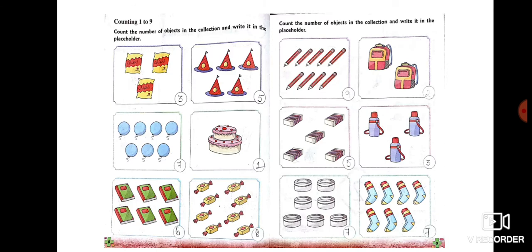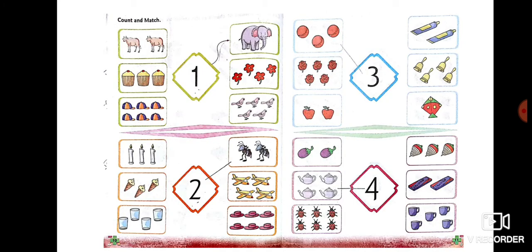Coming to the next page, here we have to count the objects in each box and write the number in the small circle at the right corner of each box. As you can see, the first box contains three packets of chips, so we have to write three in that small circle. Complete with eight and nine in the same manner. Do it on your own and check the answer by watching the video again.